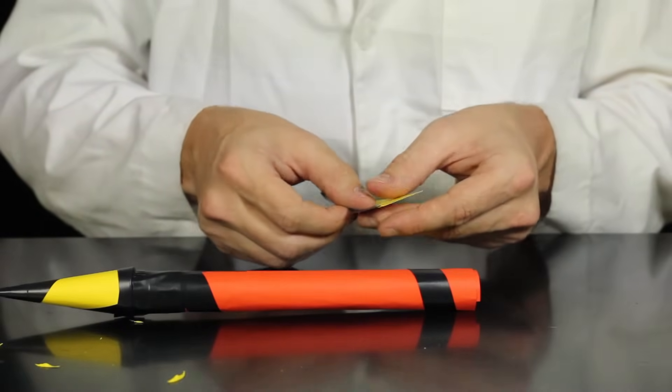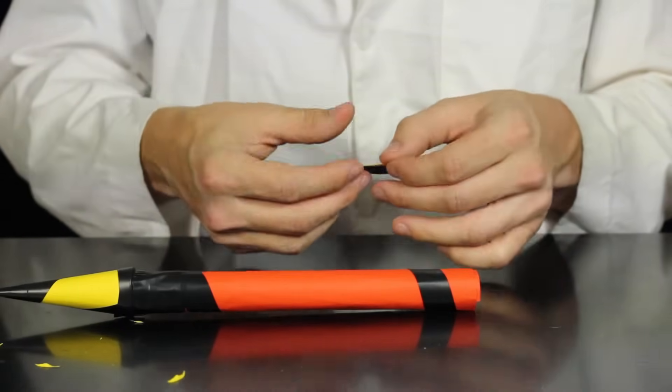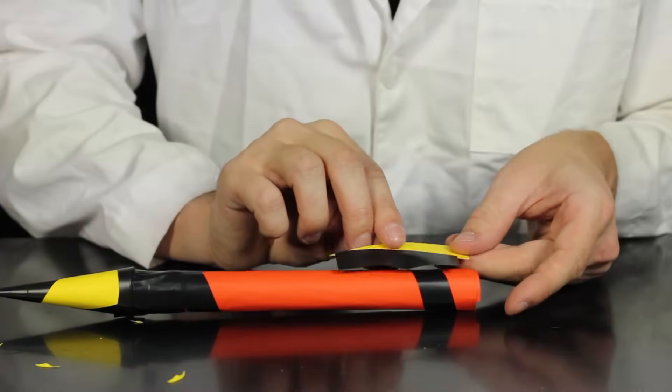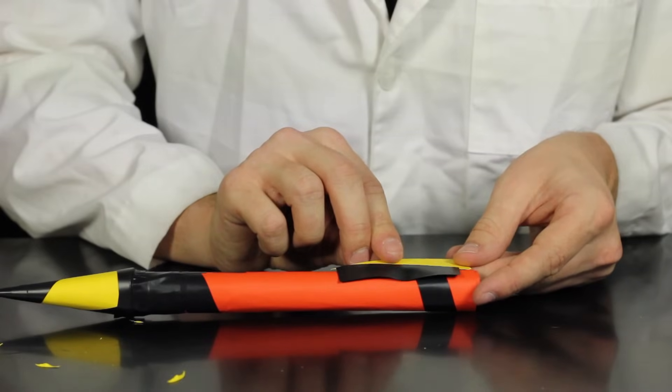Once you have the tail fins cut out, now you're ready to attach them to the body of your rocket. Here we'll be using electrical tape to do this, but you can use any number of adhesives to get the job done.